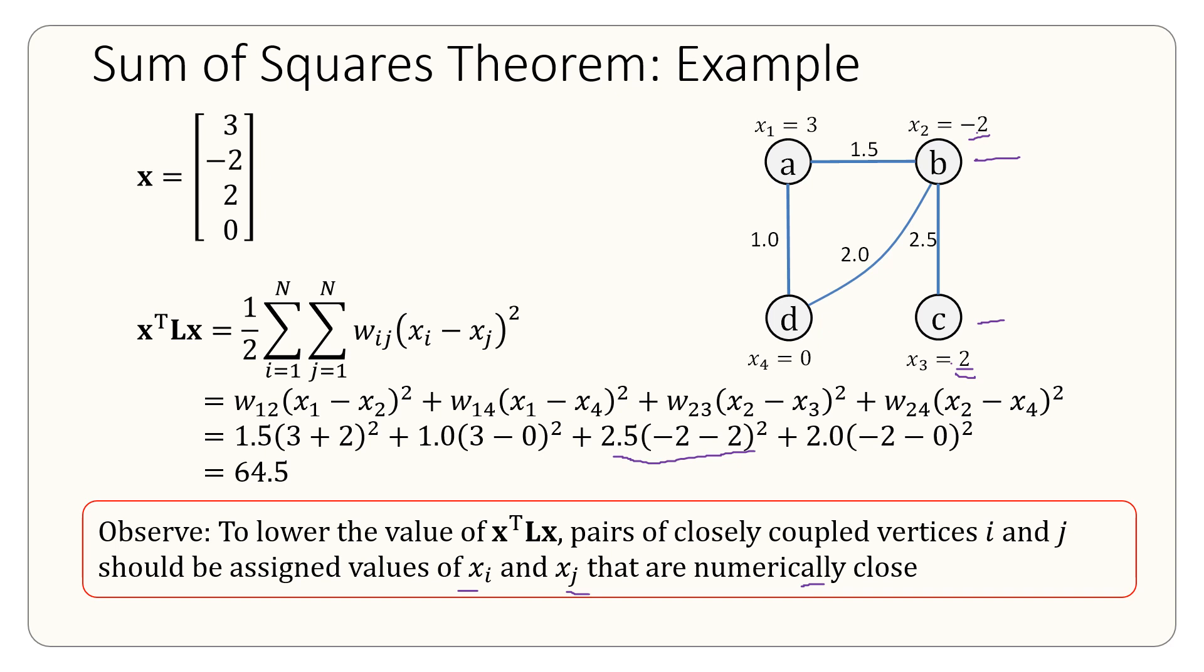And so what we get here is this term that is 16 times 2.5, that's a high value, actually equal to 40. Now suppose they're closely coupled together b and c because the weight between them is 2.5. Now instead of 2 here, I replace this with negative 2, which is the same thing as x2.